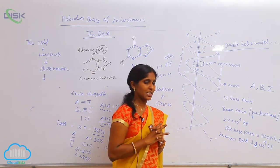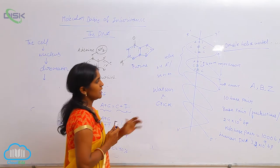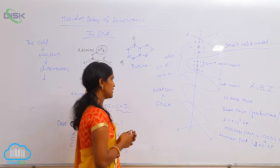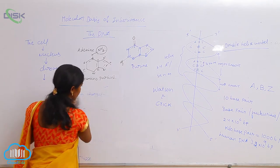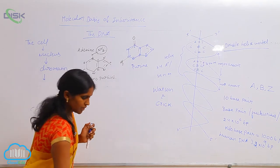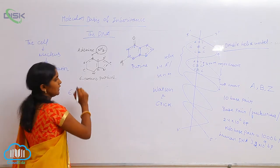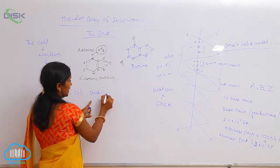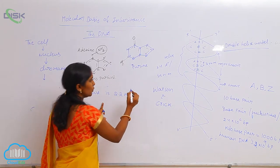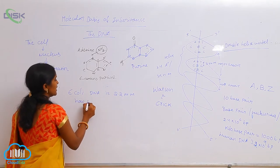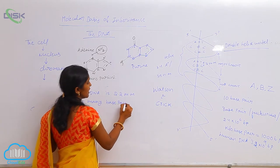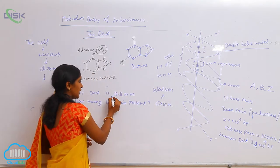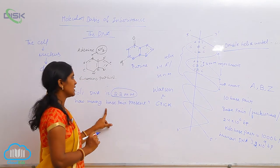This is about DNA structure, but here is a question. We are expressing length in the form of base pairs, but when you come to measurements in meters or millimeters, how can you get that? For example, if you take E. coli bacterium, the length of the DNA is given as 2.2 millimeters. How many base pairs are present? This is the question — the length is given in millimeters, but the number of base pairs is being asked.